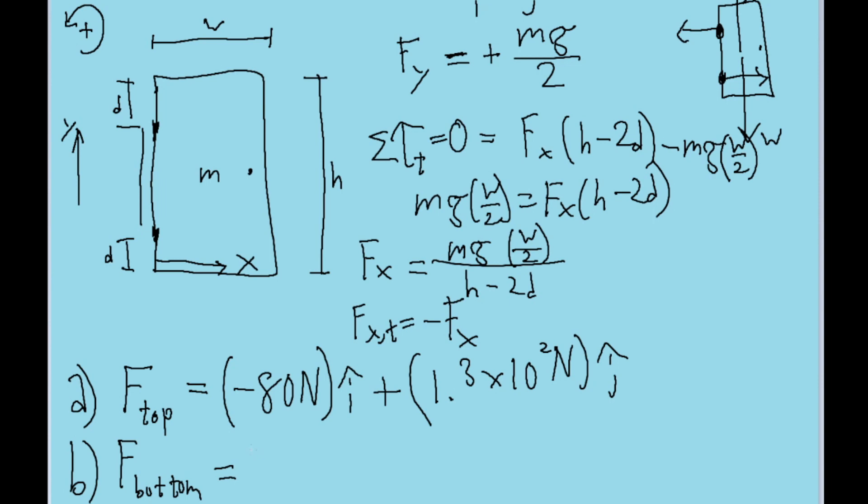The force from the bottom hinge is going to be very similar. As we discussed, the horizontal force is the same, but with an opposite direction. So that's positive 80 newtons in the i direction. And the y direction shouldn't change, because both of them are pointing up with half of the door's weight, so positive 1.3 times 10 to the power of 2 newtons, again in the j direction. So these are our final two unit vector equations to answer this problem.